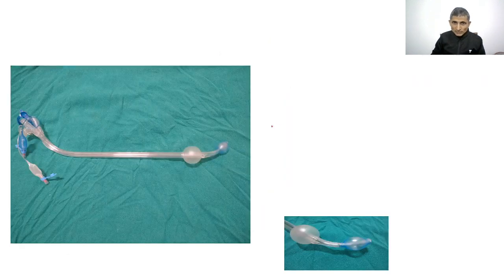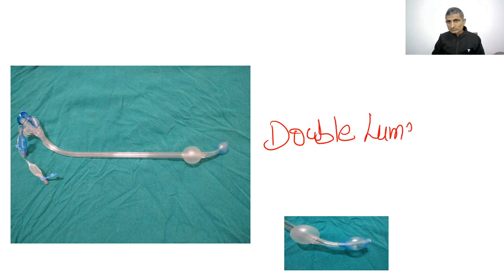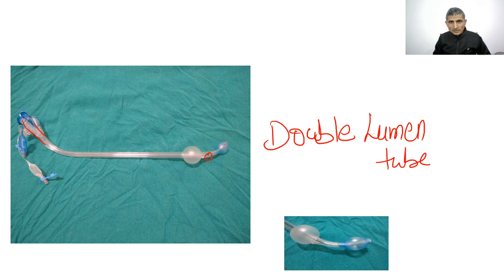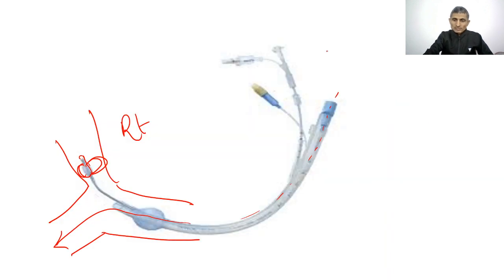The double lumen tube has two tubes joined together — one opening in each bronchus. It is also used for lung segregation. When double lumen tubes cannot be used, a bronchus blocker tube is the alternative.